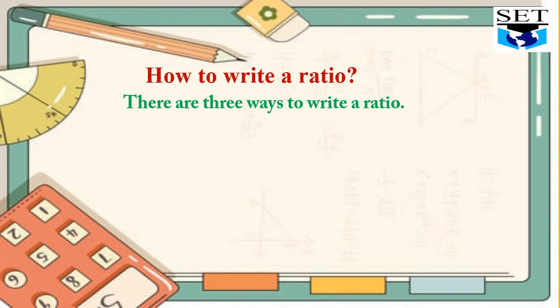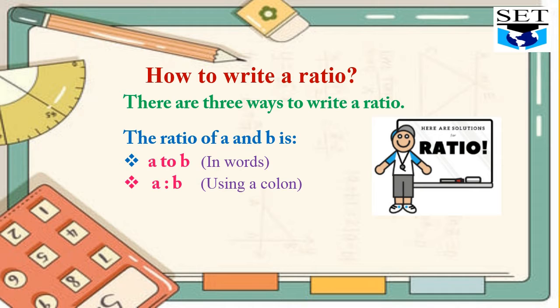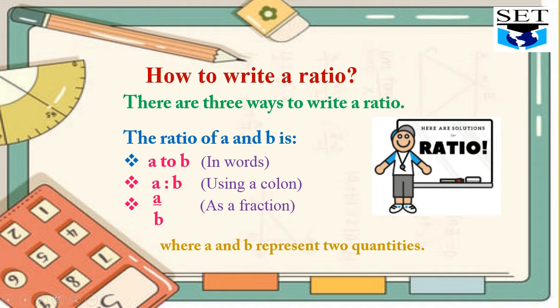How to write a ratio? There are three ways to write a ratio. We can write the ratio of a and b as a to b in words, a colon b using a colon, or a divided by b as a fraction. All three forms are correct: a to b, a colon b, and a/b, where a and b represent two quantities.